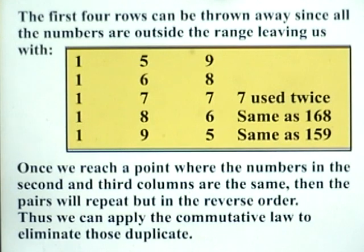The first four rows can be thrown away since all the numbers are outside the range, leaving us with these five. Of those, the seven-seven can be thrown away.